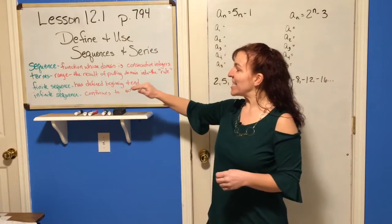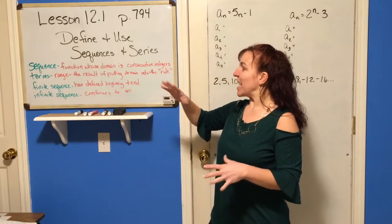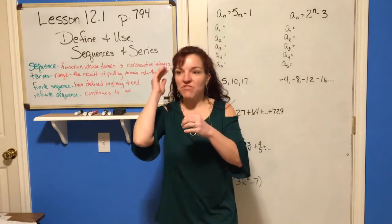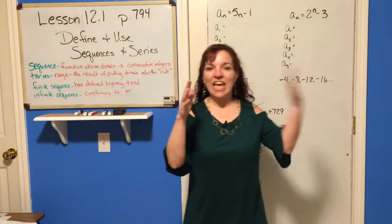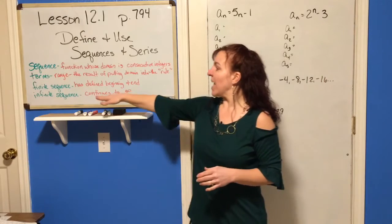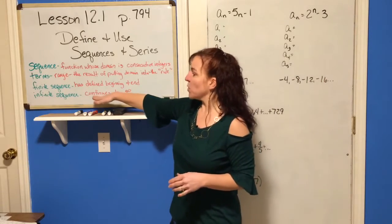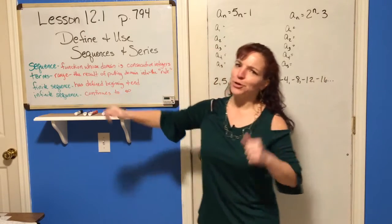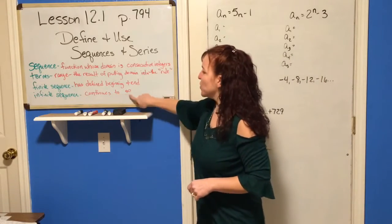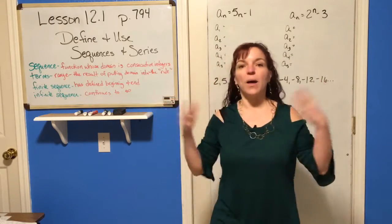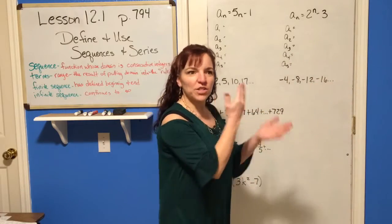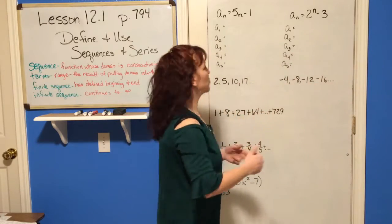A finite sequence is a sequence with a defined beginning and end — there are endpoints to it. Whereas an infinite sequence obviously goes on to infinity, continuing to the right, starting with 1 and going to infinity.